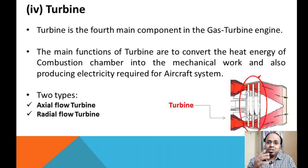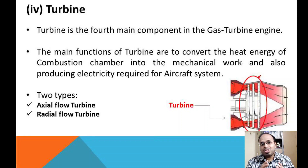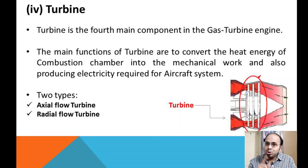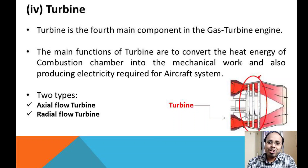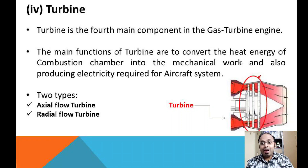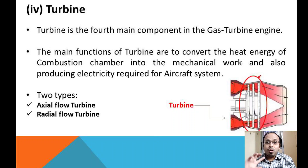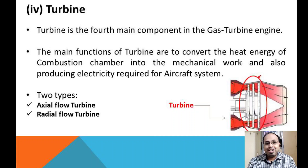The turbine is the fourth main component. Its main functions are to convert the heat energy from the combustion chamber into mechanical work, and also to produce electricity required by the aircraft system. The turbine is connected to the compressor via an axial shaft, and also connected to a generator in the aero engine.